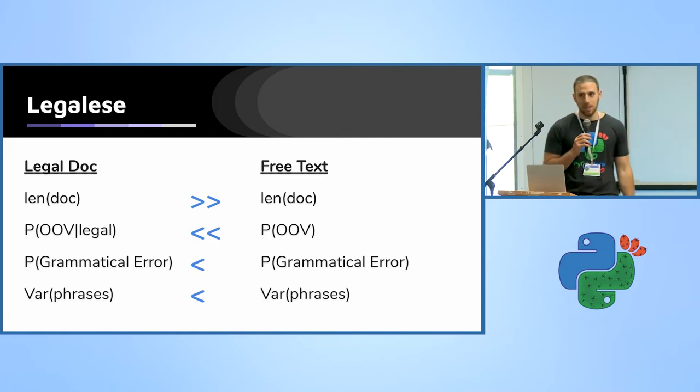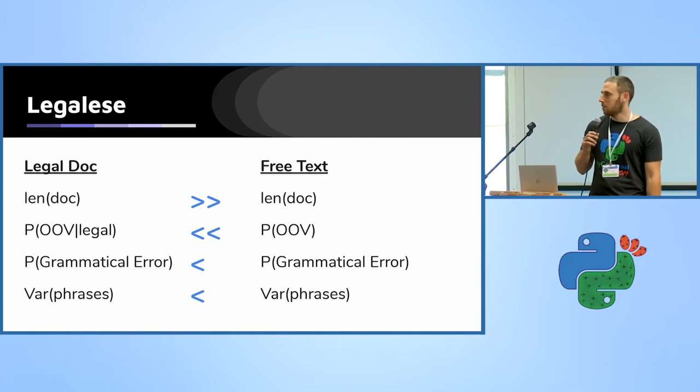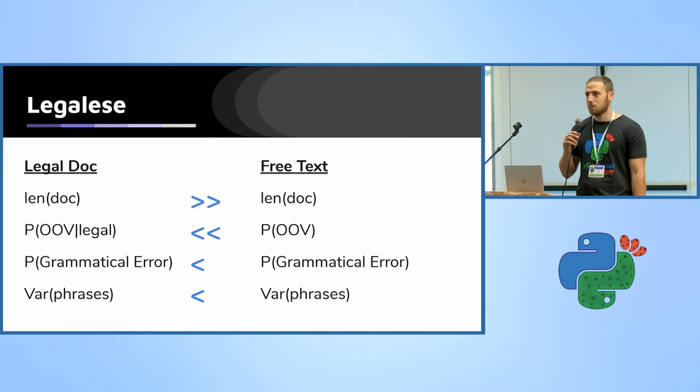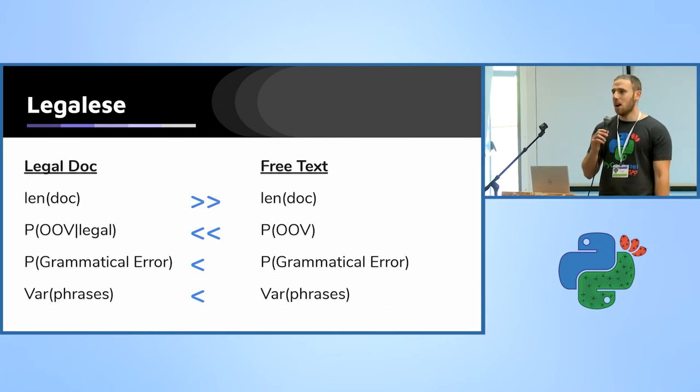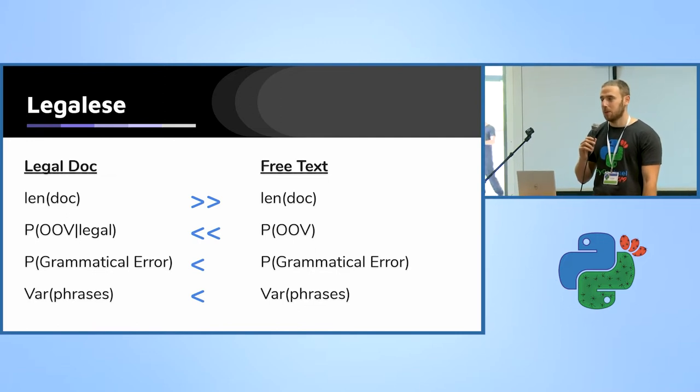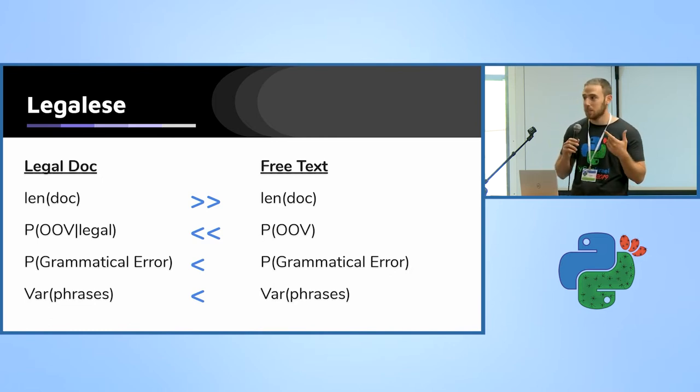Also for the same reasons, the grammar is pretty much fine. It's not that you won't find any grammatical errors, but far, far less. And there are a lot of phrases that we can take account of, for example, 'governing law' is a phrase and can be regarded as one token since it repeats a lot of times.